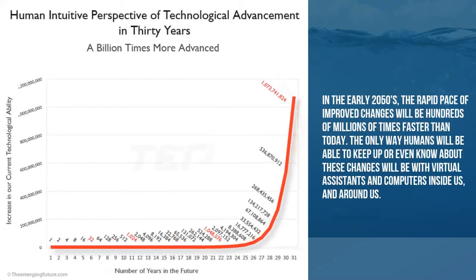Looking out 30 years — now we're in the early 2050s — this rapid pace of change will be hundreds of millions of times faster, and really the only way humans will be able to keep up will be through virtual assistants and computers around us or potentially inside us. This becomes the concept of the singularity, where we likely will not be able to interact with the world without technology of some kind.